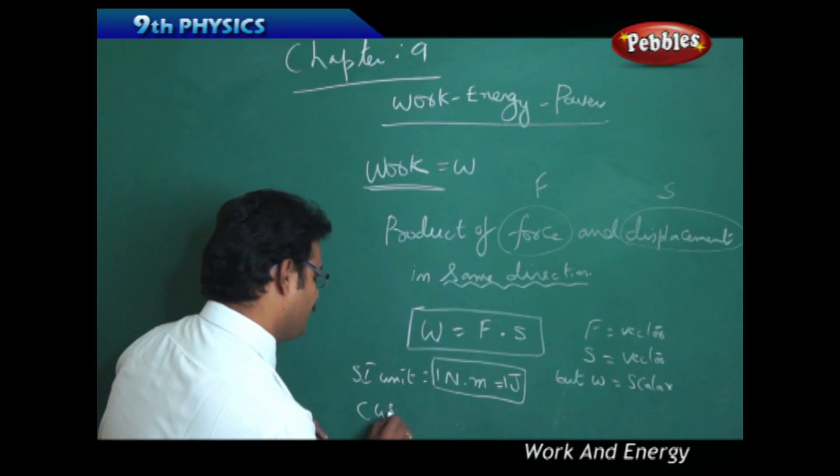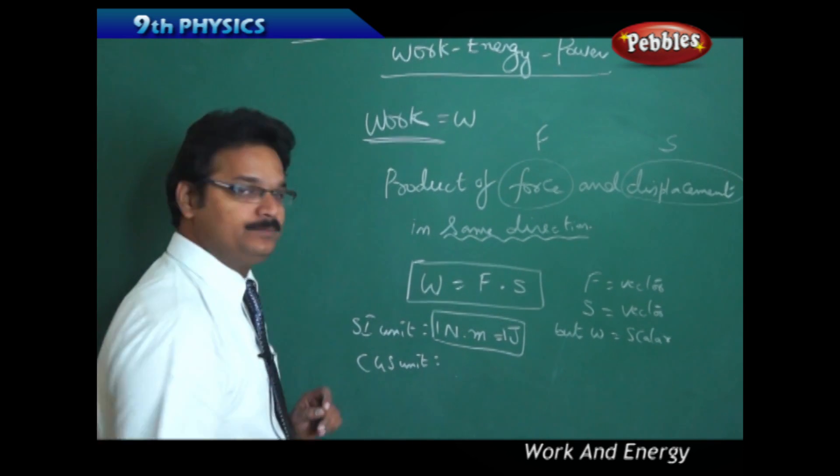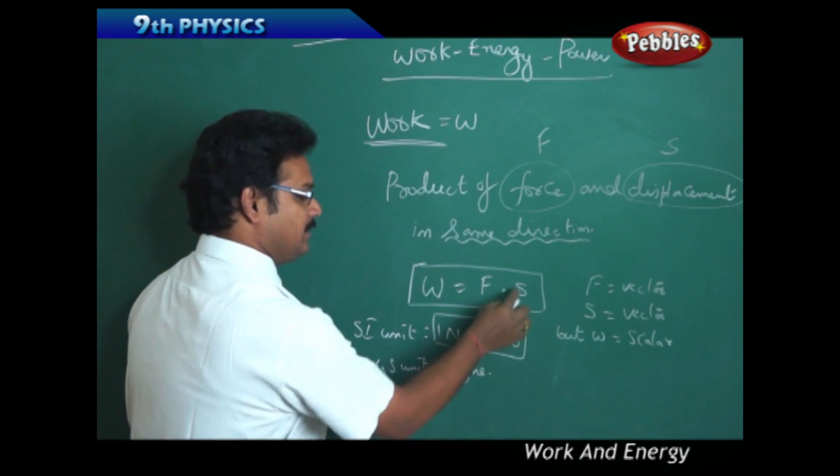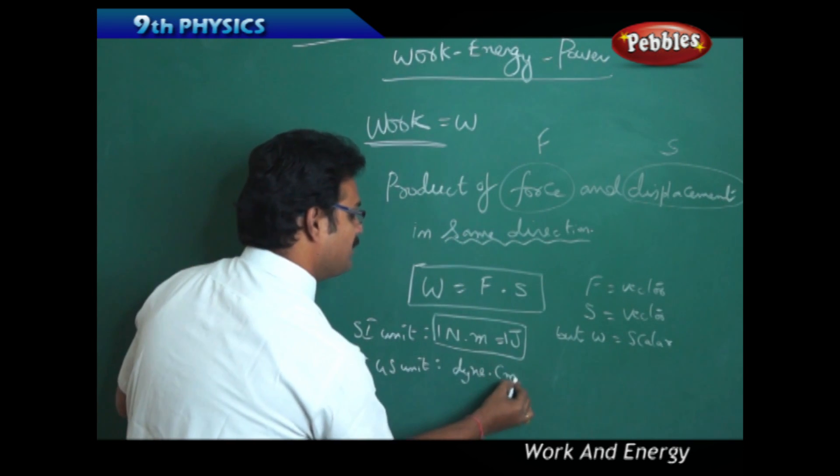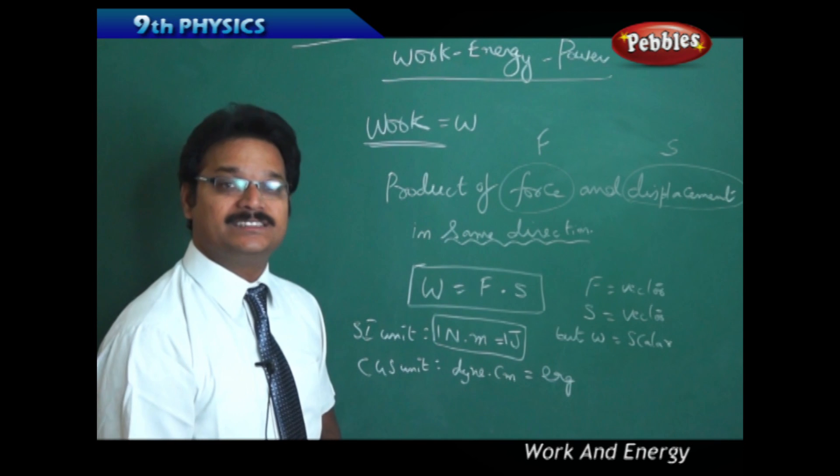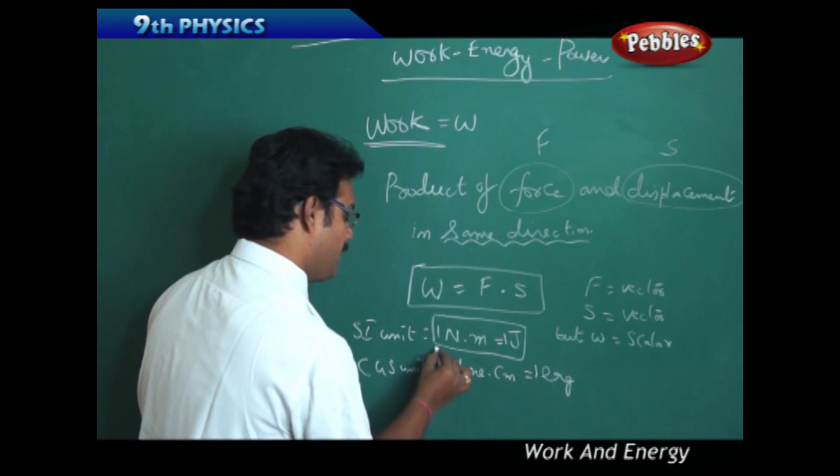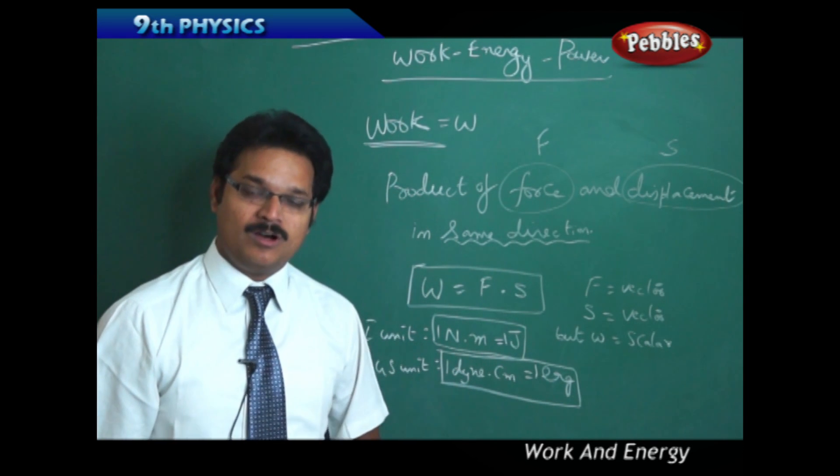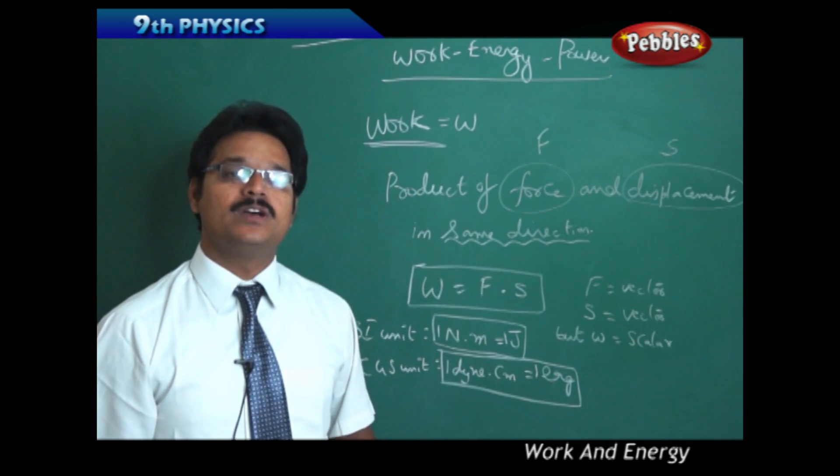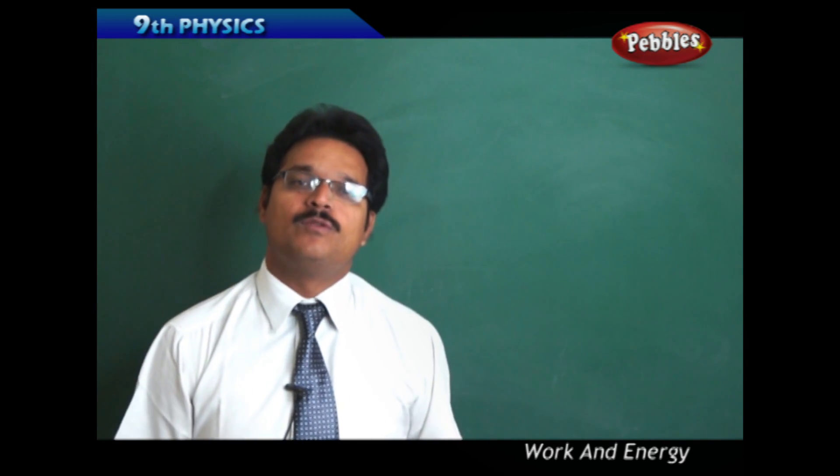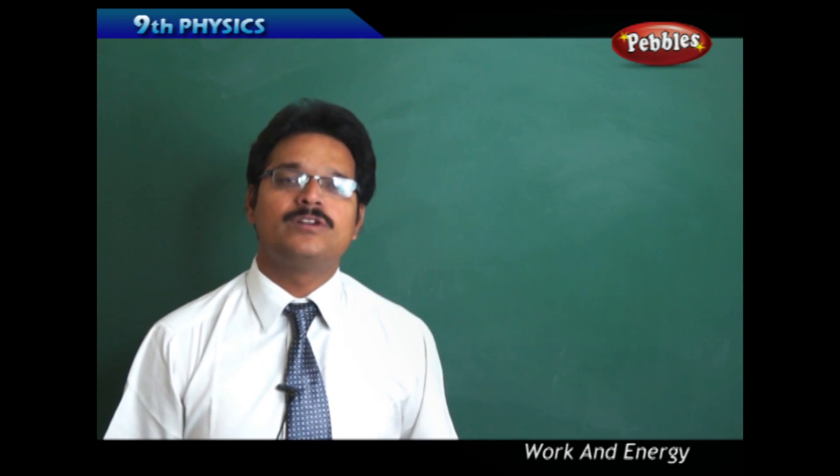Now CGS unit of work: force CGS unit is dyne, displacement CGS unit is centimeter. This dyne centimeter can also be called as erg. So one erg equals to one dyne into centimeter. If I say that a work of 300 ergs is also equal to a work of 300 dyne centimeter. So we understand that SI unit of work is Joule, CGS unit of work is erg.